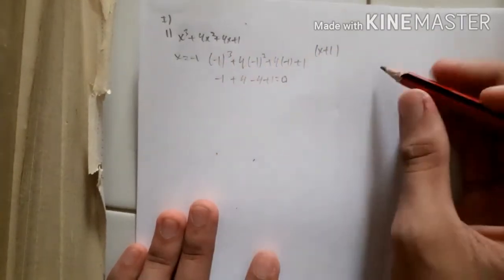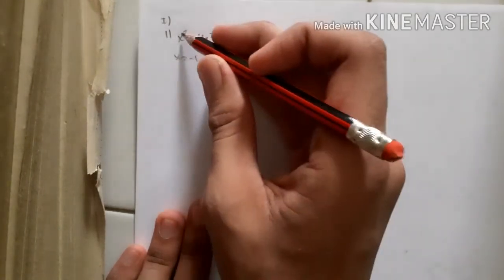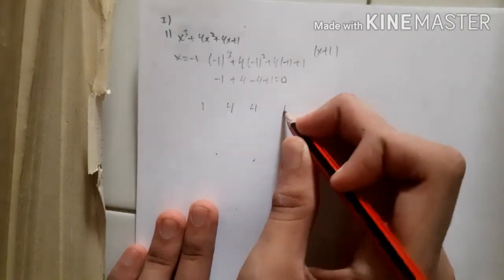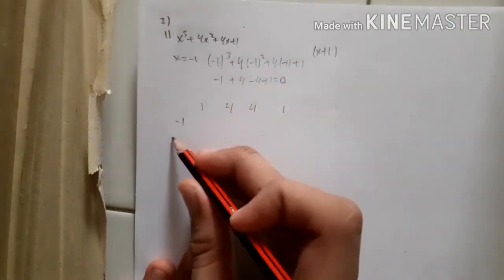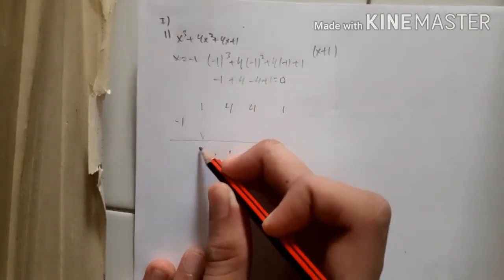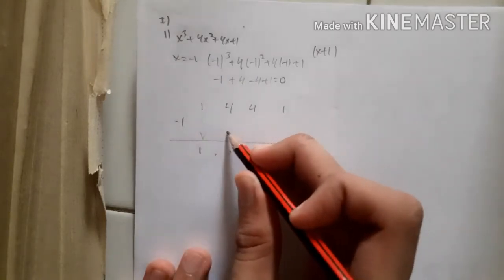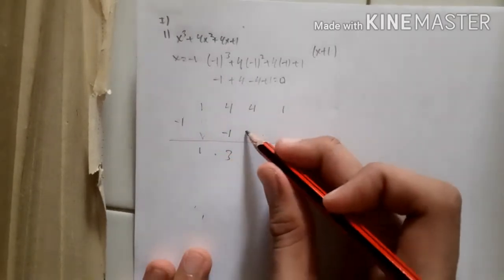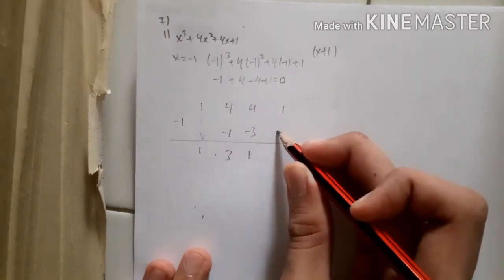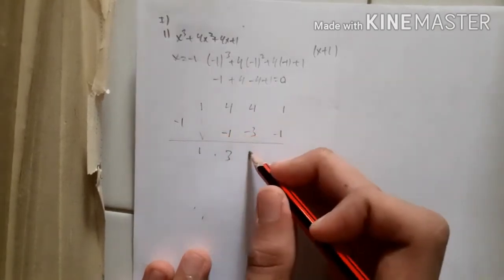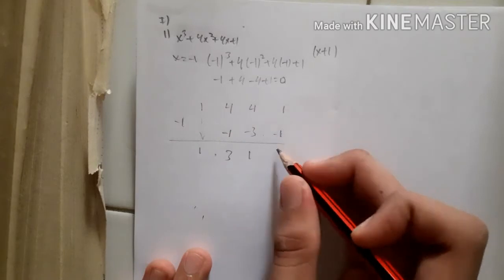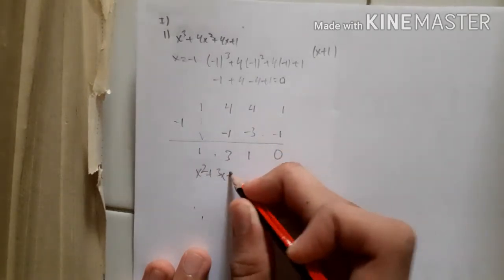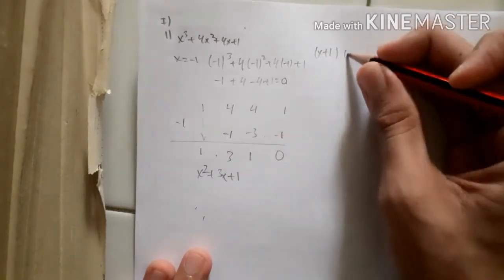We apply the Horner method, writing down the coefficients: 1, 4, 4, and 1, with x = −1. Performing the synthetic division: bring down 1, then 1×(−1) = −1, giving 3; then 3×(−1) = −3, giving 1; then 1×(−1) = −1, giving 0. The resulting quadratic factor is x² + 3x + 1.